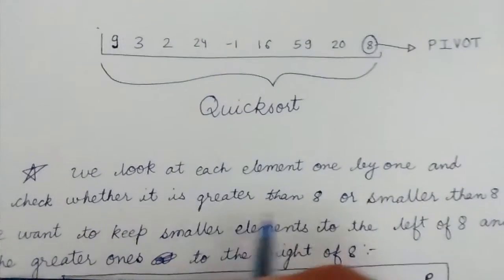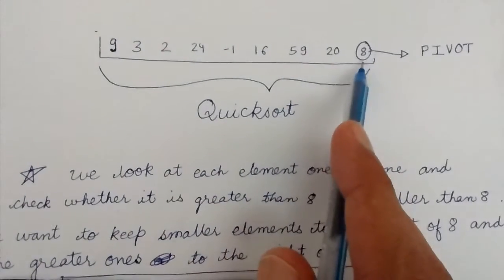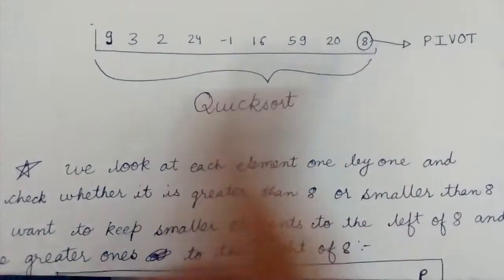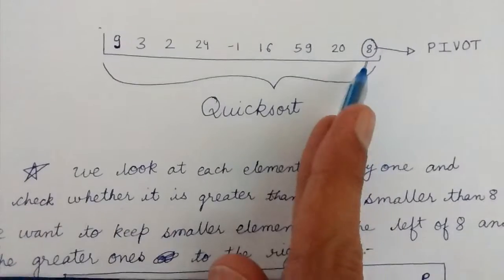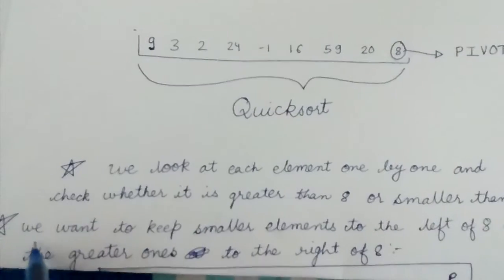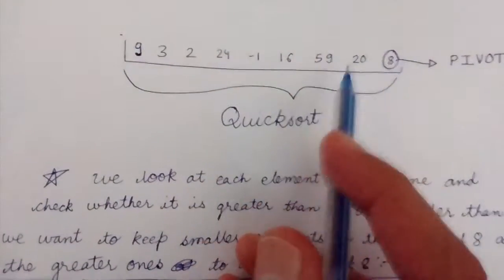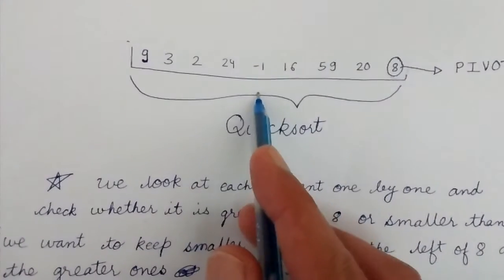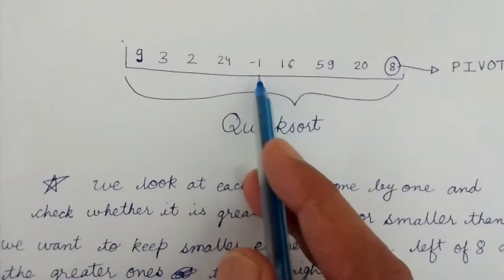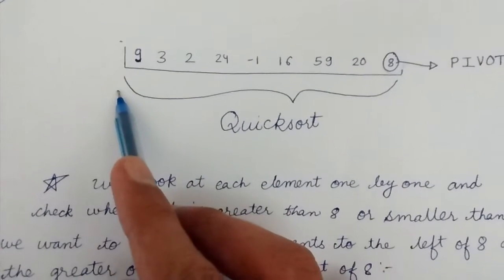Then we look at each element one by one and check whether it is greater than or smaller than the pivot element 8. Our task is to keep smaller elements to the left of 8 and the greater ones to the right. So finally, at the end of this partition, our aim is to place the greater elements to the right of 8 and the smaller elements to the left of 8.